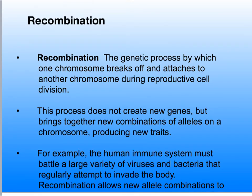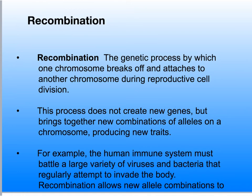Genetic diversity can also be created through recombination. In plants and animals, genetic recombination occurs as chromosomes are duplicated during the reproductive cell division cycle. A piece of one chromosome breaks off and attaches to another chromosome. This process does not create new genes, but it does bring together new combinations of alleles on a particular chromosome, and therefore it can produce new traits. For example, the human immune system must battle a large number of viruses and bacteria that regularly invade the body. When recombination alleles come together, they can provide new immune system defenses that improve our effectiveness against invading organisms.